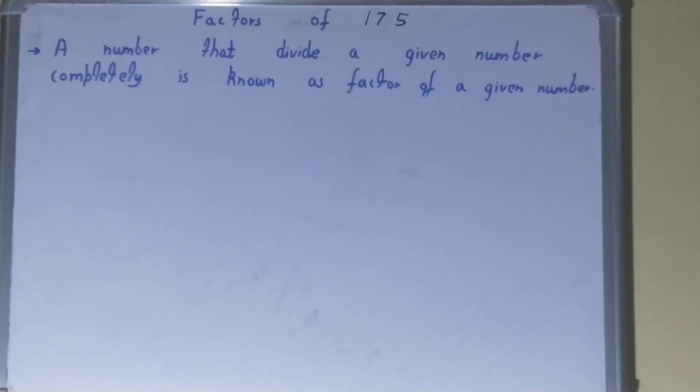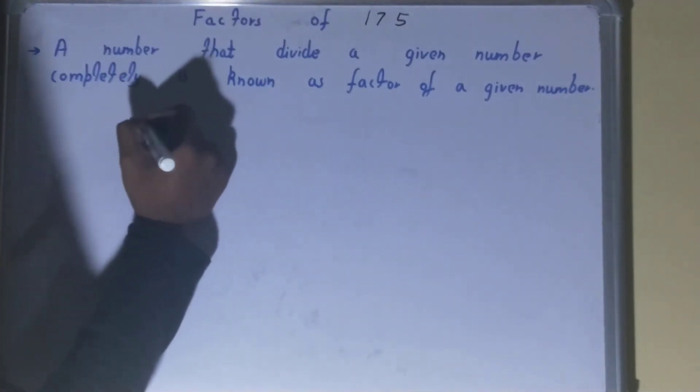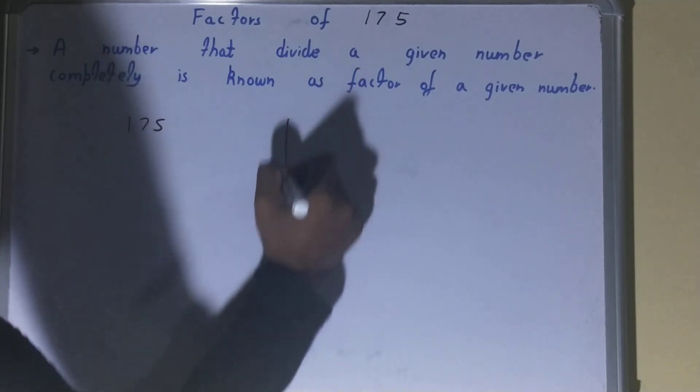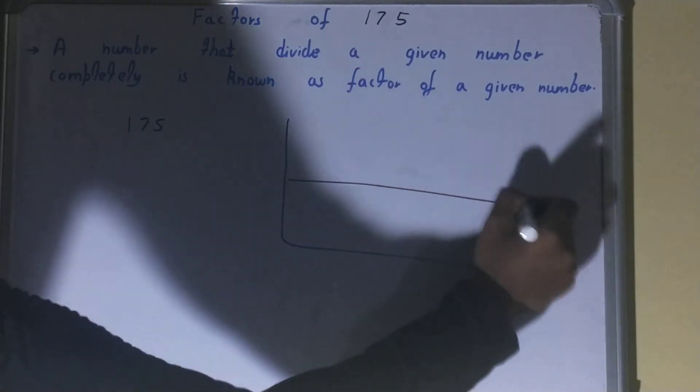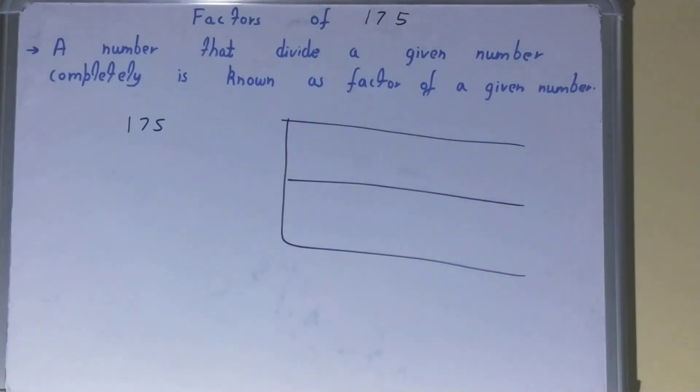Hello friends, in this video I'll be helping you with the factors of the number 175. So let's start. To find it out, you need to write the number like this and draw like this. Once you are done with that, you need to start with the lowest natural number.